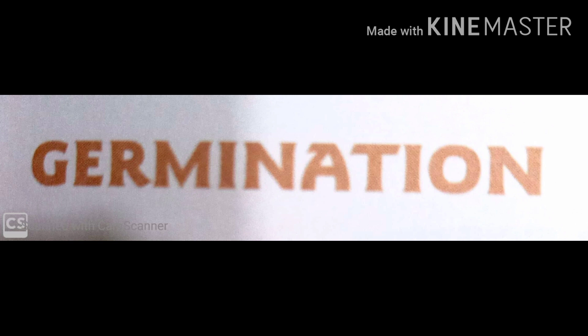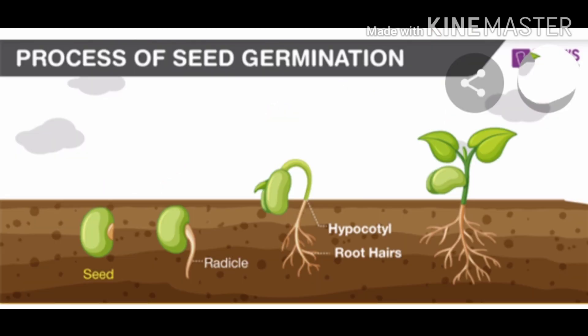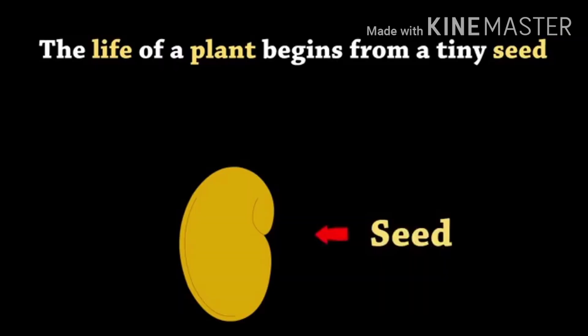Germination. A seed contains a baby plant inside it. Once the seed gets the right amount of air, warmth and water, it starts growing into a new plant. The process by which a seed grows into a new plant is called germination. The basic steps for germination are: